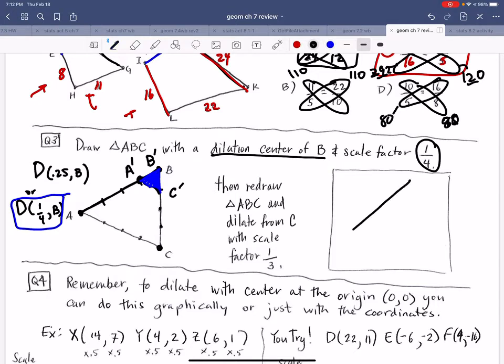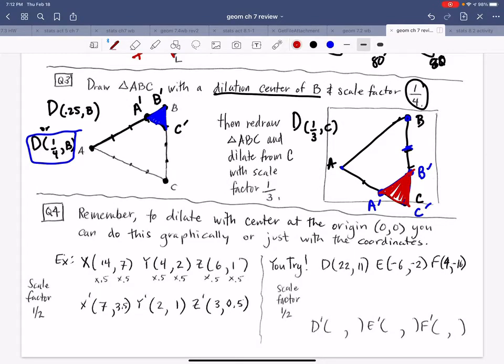Now it asks, redraw your shape. So here's our shape A, B, C. And now do a dilation of a scale factor of 1/3 from C. So now I'm going to shrink it to C, but I'm going to cut it in thirds. C prime stays in the same spot, but now B would move here to B prime, and A would move here to A prime. Notice they're very similar, but I'm shrinking it from C instead of from B.